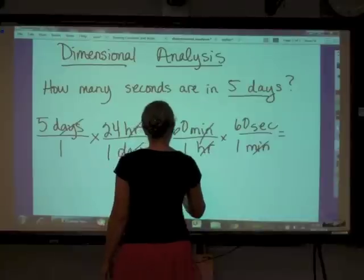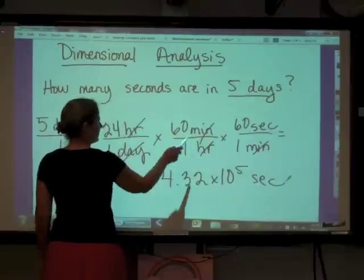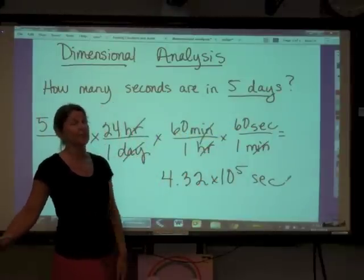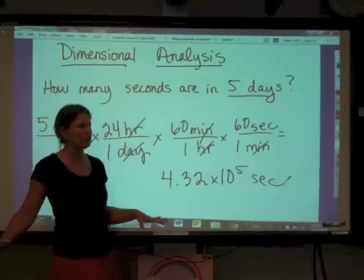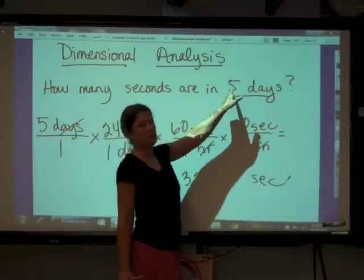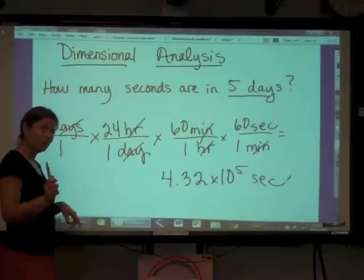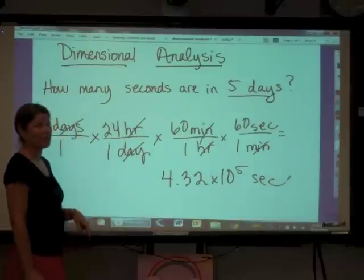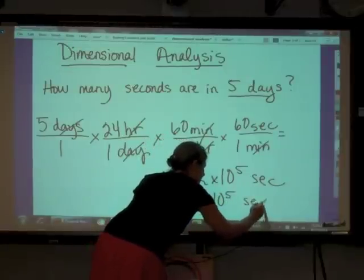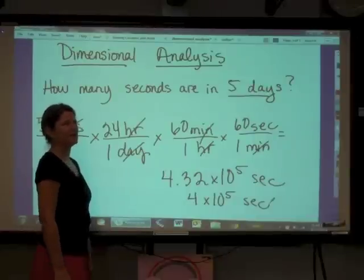Now these are conversion factors, so we assume that they have an infinite number of significant figures. My measurement here is this five. How many significant figures does it have? One. So that means I have to round this answer to one significant figure, which would be 4 times 10 to the fifth seconds. This answer, 4.32 times 10 to the fifth, would be a fine answer if instead of saying five days it said 5.00 days.